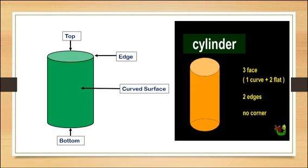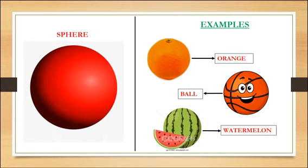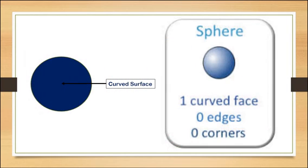Now let's learn the next shape. Look at here. This is sphere. Example: orange, ball, watermelon. Such shapes are known as a sphere.